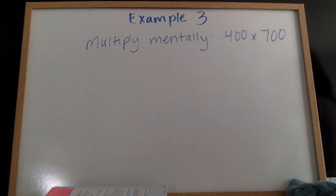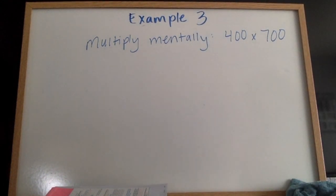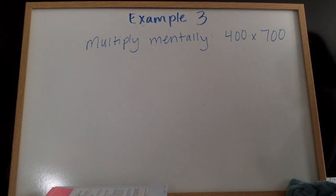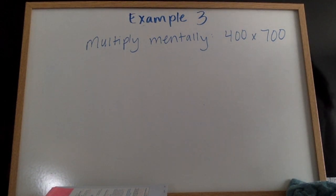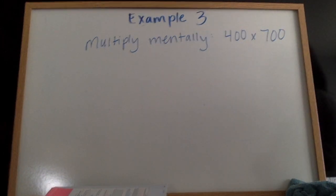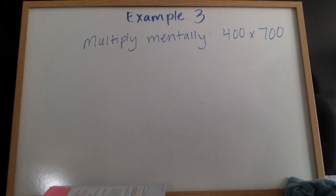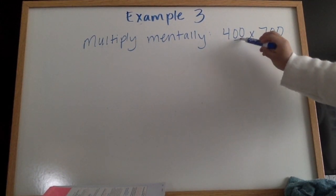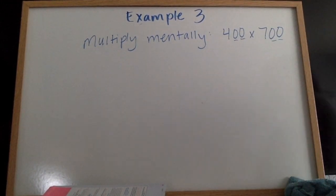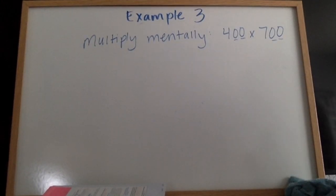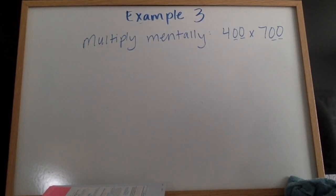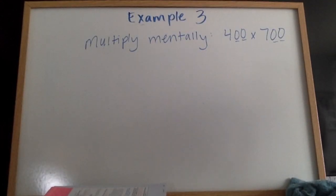Example three, last one. It asks us to multiply mentally 400 times 700. Do not rewrite this. I want you to be thinking of it in your head. I'm going to pretend to cover up my zeros and count how many there are in my head. I found four zeros. I'm going to show you: one, two, three, four. So I'm going to remember those four zeros and put those on in the product at the end. Now I'm left with four times seven. I'm going to do that in my head. I know four times seven is 28.